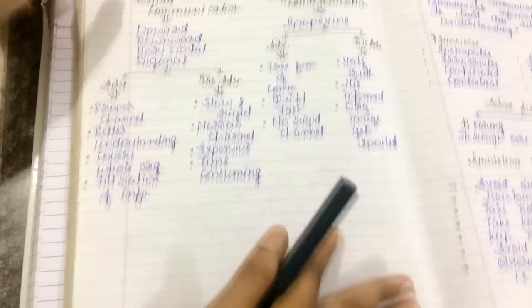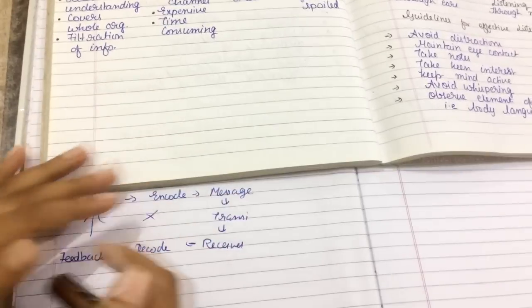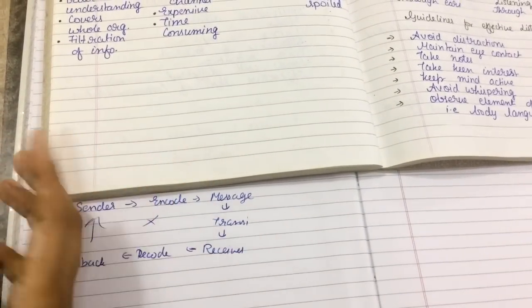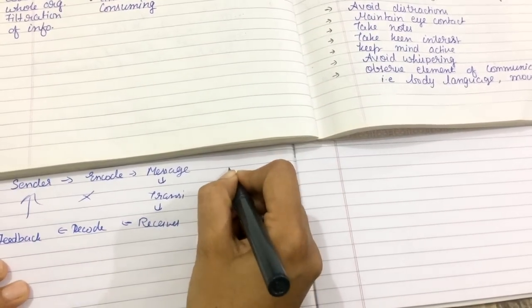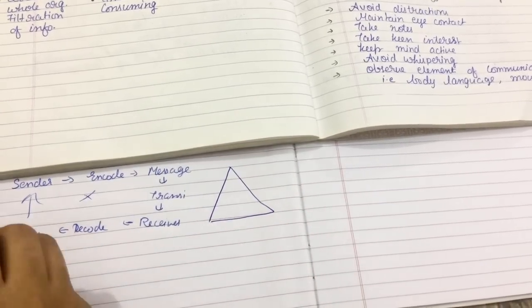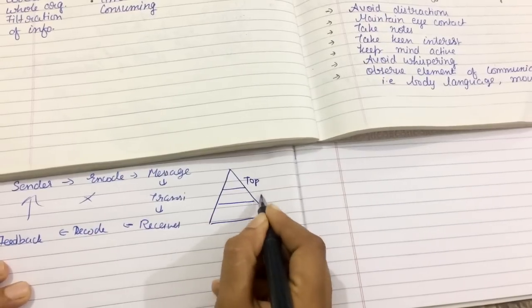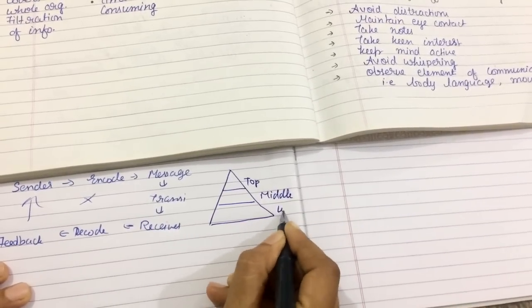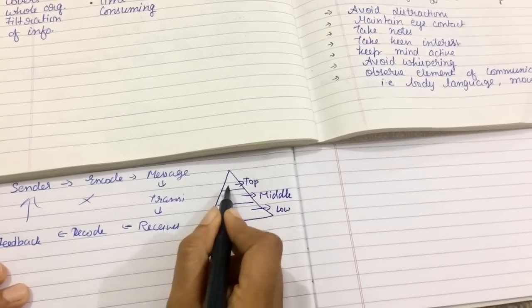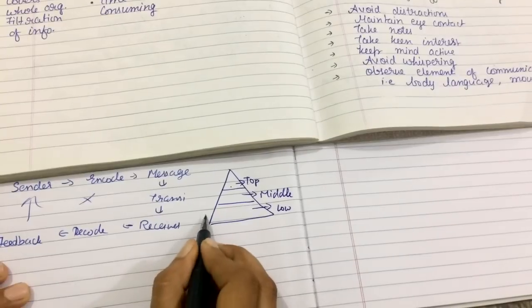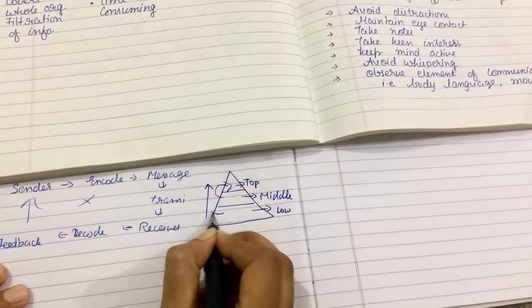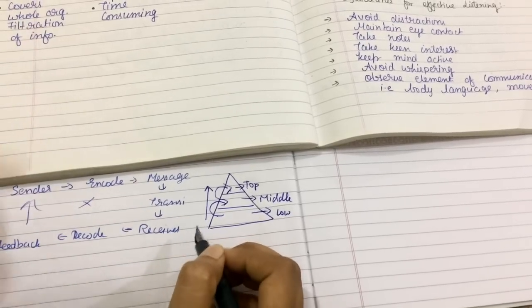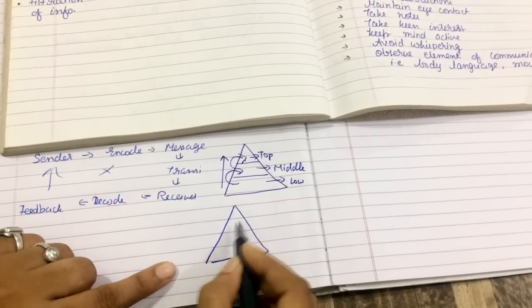Let us understand each type in detail. We have three management levels: top level management, middle level management, and low level management. Upward communication is when communication goes from down to up — middle level managers talk to top level managers, or low level managers talk to middle level managers. That is called upward communication.